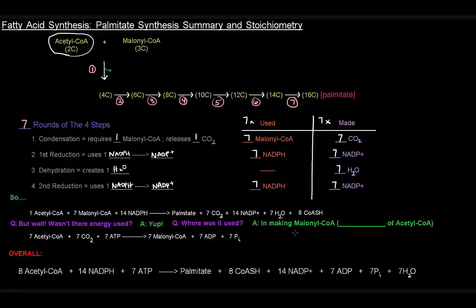In making the malonyl-CoA from acetyl-CoA—the activation step. Each malonyl-CoA we made came from an acetyl-CoA, and that required one ATP each time. Since we had seven malonyl-CoA's, those came from seven acetyl-CoA's. There was a carboxylation reaction by acetyl-CoA carboxylase that required seven ATPs to make seven malonyl-CoA's, producing ADPs and phosphates.